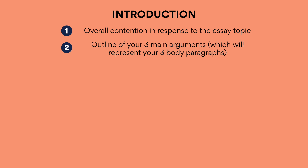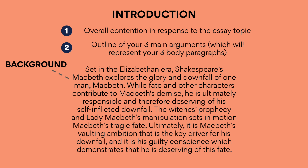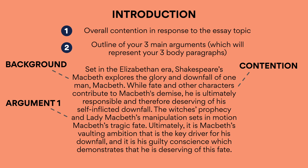Feel free to execute according to your own volition. Set in the Elizabethan era, Shakespeare's Macbeth explores the glory and downfall of one man, Macbeth. While fate and other characters contribute to Macbeth's demise, he is ultimately responsible and therefore deserving of his self-inflicted downfall. The witches' prophecy and Lady Macbeth's manipulation sets in motion Macbeth's tragic fate. Ultimately, it is Macbeth's vaulting ambition that is the key driver for his downfall, and it is his guilty conscience which demonstrates that he is deserving of this fate. I know this introduction is slightly clunky — I've literally pulled pieces of the plan together so you can see how the skeleton works. You can modify it and paraphrase the arguments so that it flows a little bit nicer.